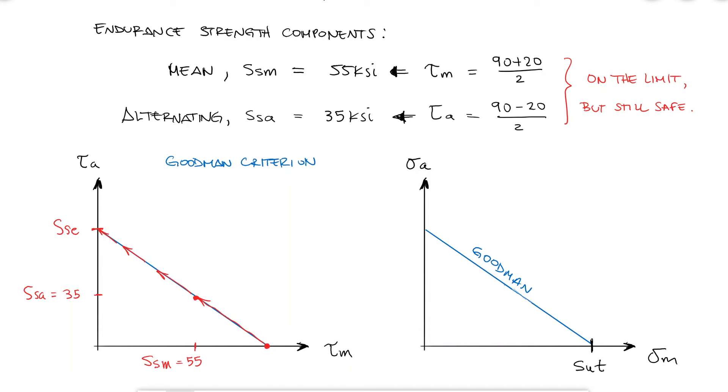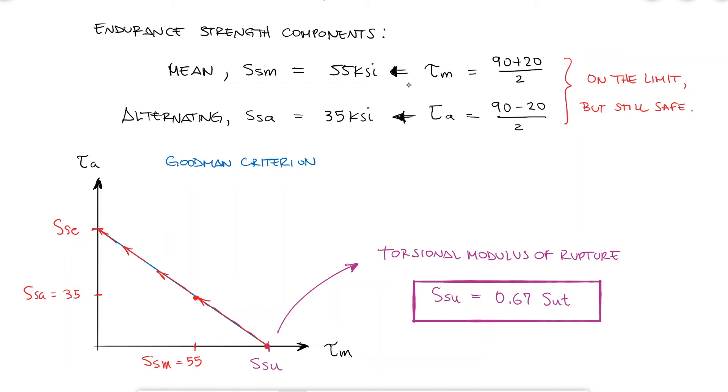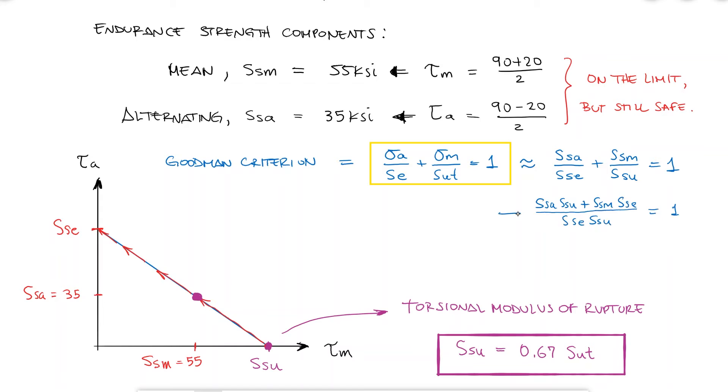The ultimate strength equivalent for shearing stresses is called the torsional modulus of rupture, SSU, and the shearing testing of many common spring materials shows it can be estimated as 67% of the ultimate strength of the material. The graphical projection to the y-axis of a line that originates at x equal to SSU and passes through the endurance strength components location, SSA and SSM, can be mathematically represented by solving for SSE from the Goodman equation.